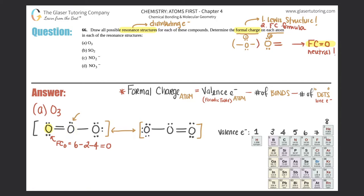Next, the central oxygen has three bonds. Formal charge = 6 (valence) minus 3 (bonds) minus 2 (dots) = plus one. So this oxygen has a formal charge of +1. As a generalization: any time you see oxygen with three bonds and one lone pair, it will always have a formal charge of +1.